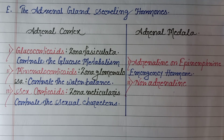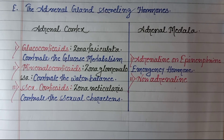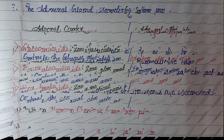From the adrenal medulla, two types of hormones are secreted. First is adrenaline, or epinephrine, also called the emergency hormone. Second is noradrenaline.